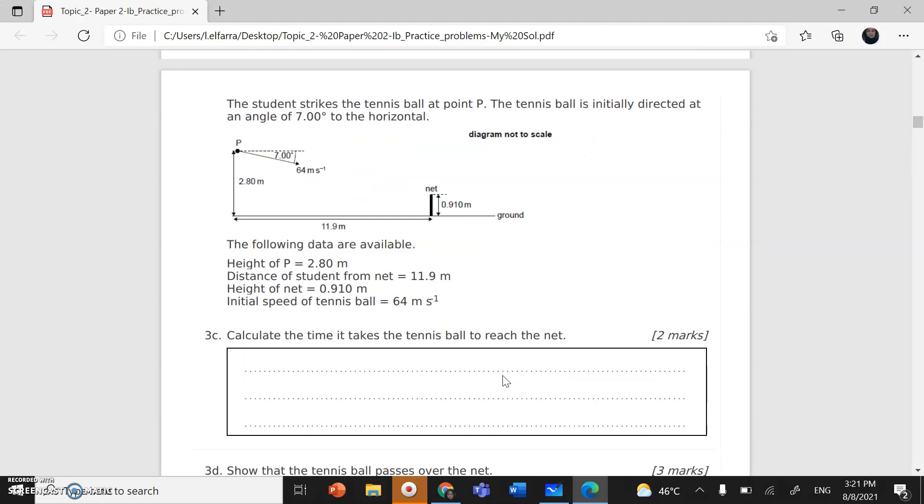Just to refresh your memory a little bit, the question was about a student who strikes a tennis ball at point P. The ball initially has a height 2.8 from the ground and the ball was launched horizontally with a velocity 64 meter per second at an angle 70 degrees below the horizontal.